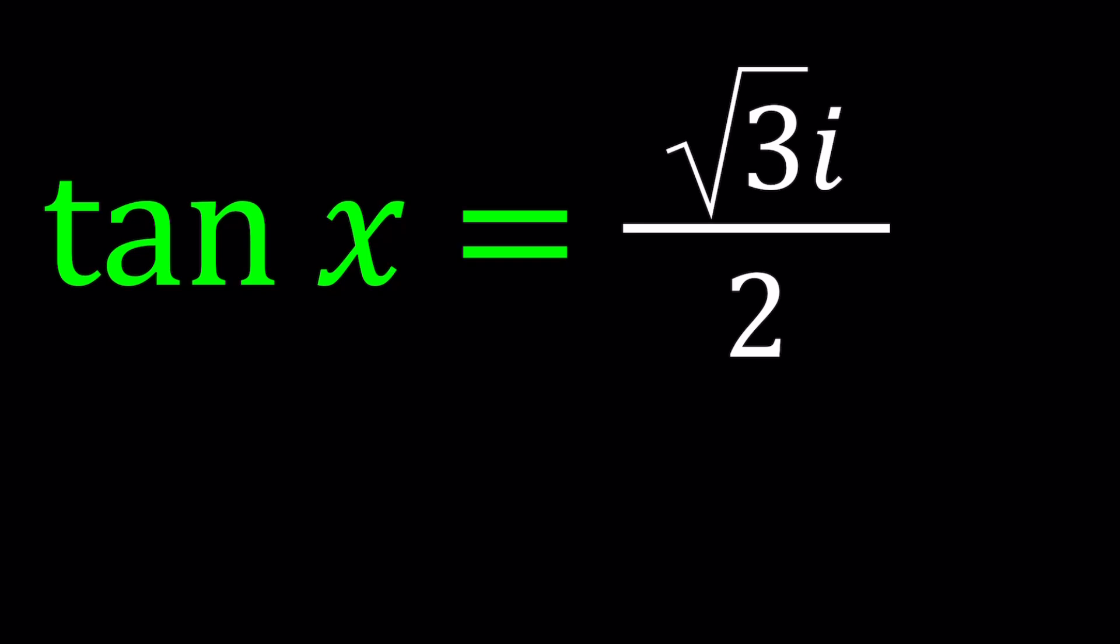So we do know that tangent x can take pretty much any values between negative infinity and positive infinity, but what happens if it takes a non-real value? Does x exist? And is x going to be a complex number, or can it be a real number? Let's get into this.